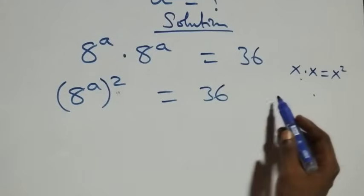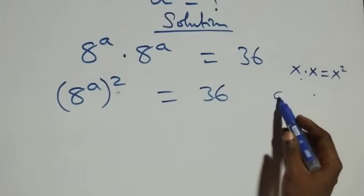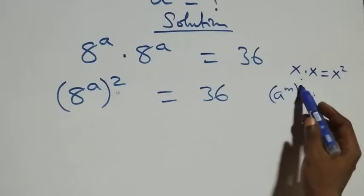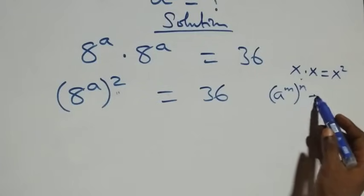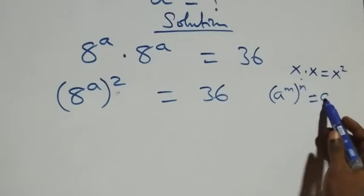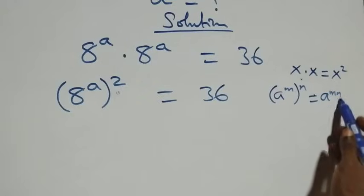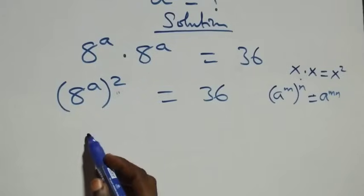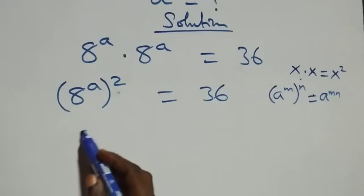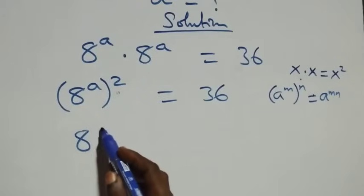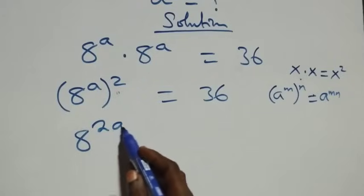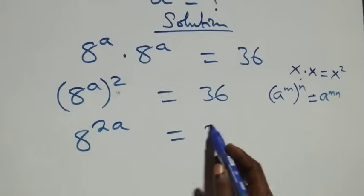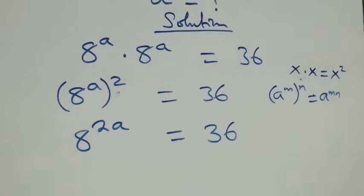This follows from the rule: when we have a raised to power m, raised to power n, that can be written as a raised to power m times n. So the powers multiply, and all we have becomes 8 raised to power 2a equals 36.